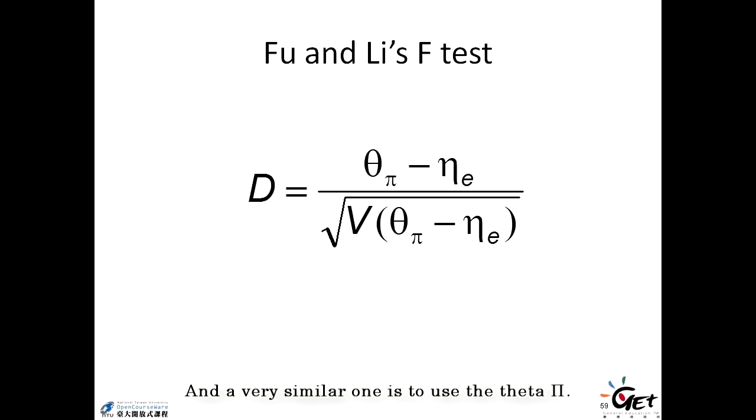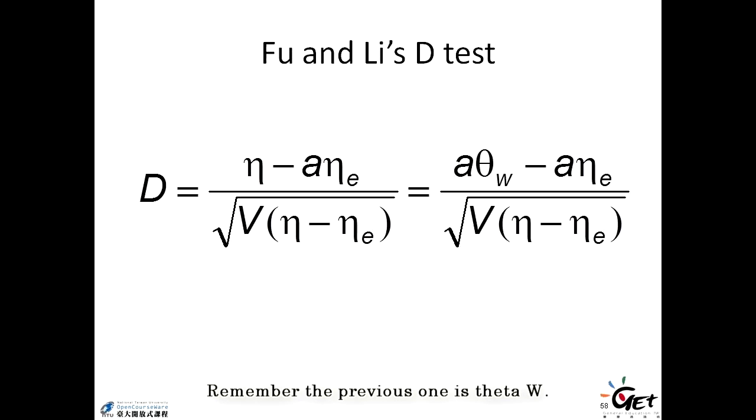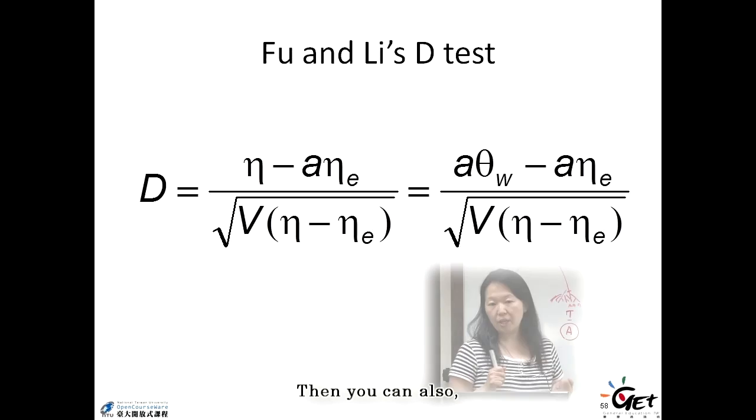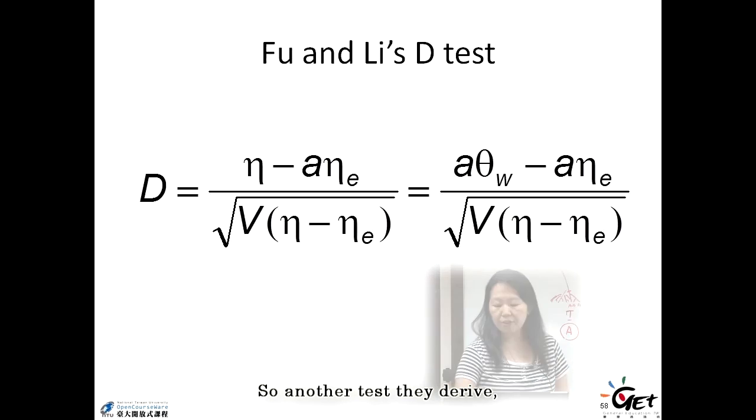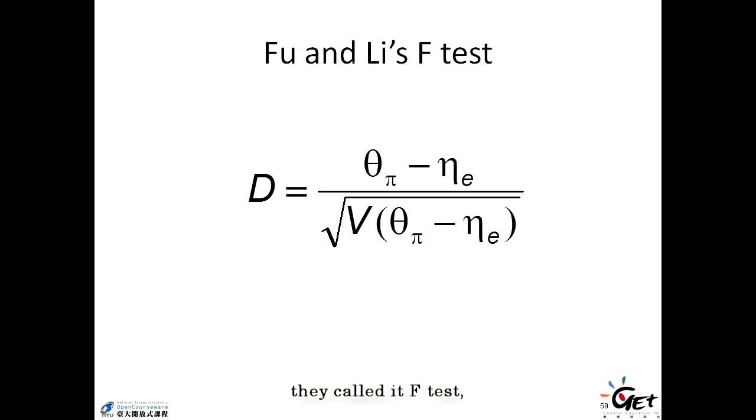And a very similar one is to use the theta pi. So remember the previous one is theta w. Then you can also, because theta pi and theta w also estimate the population polymorphism. So another test they derive, they call it F test. It's the one using theta pi in the formula. So it's all the D statistics. So the differences between the two estimates divided by their variance, the components of their variance. But they compare different parts of the different types of the estimates. So that's the basic idea of Fu and Li's D test.